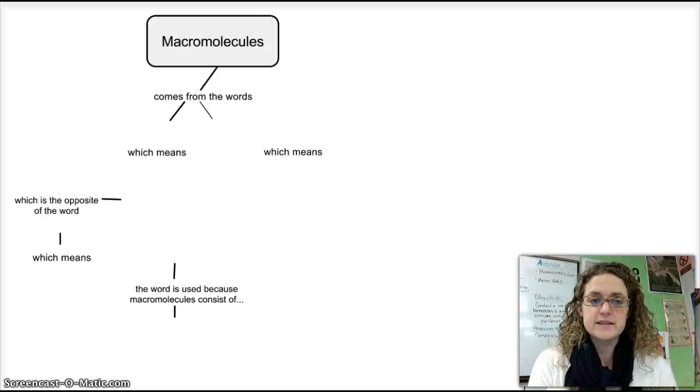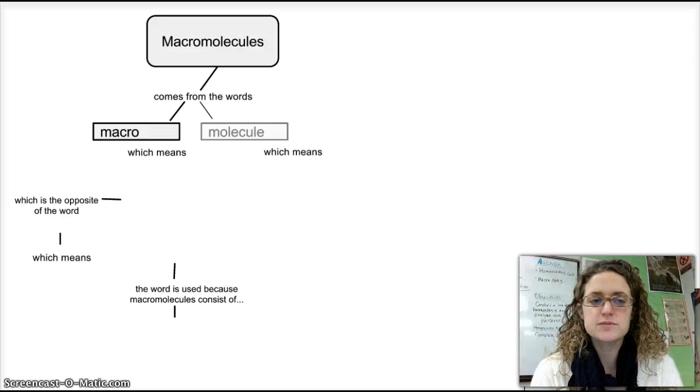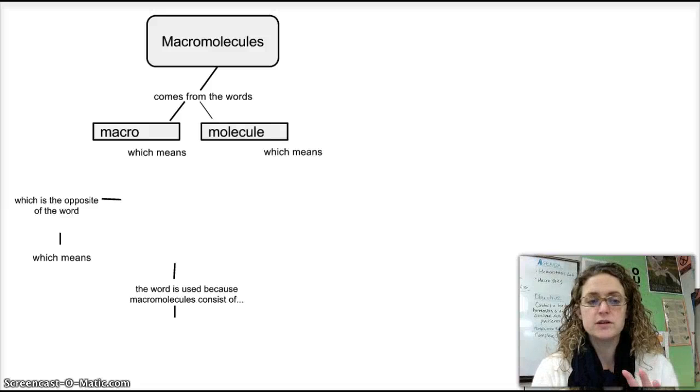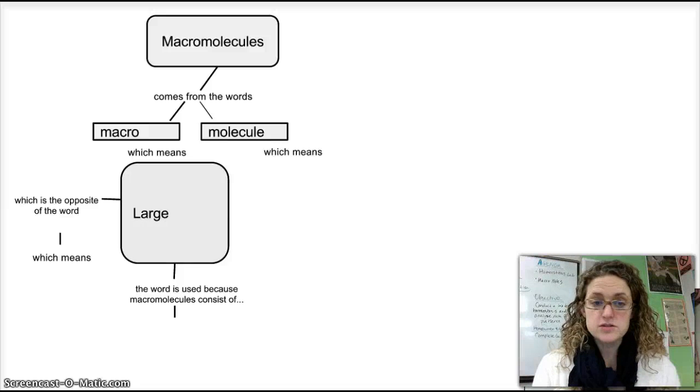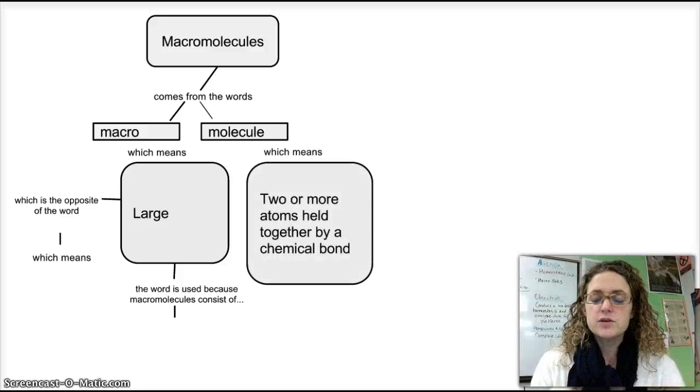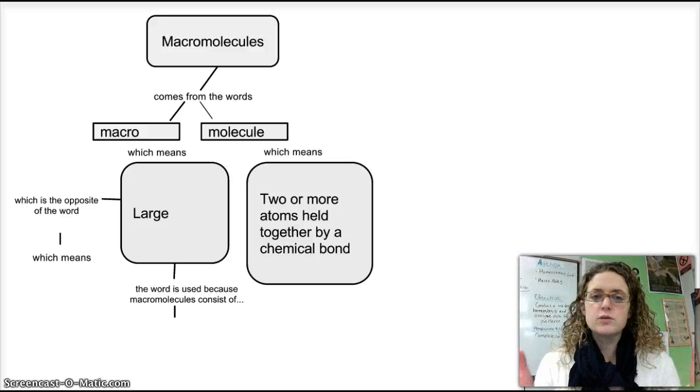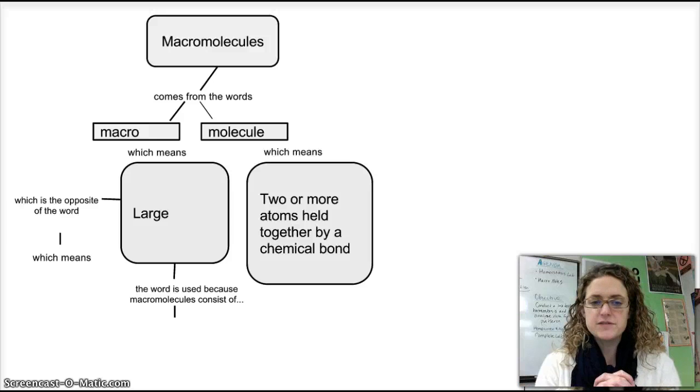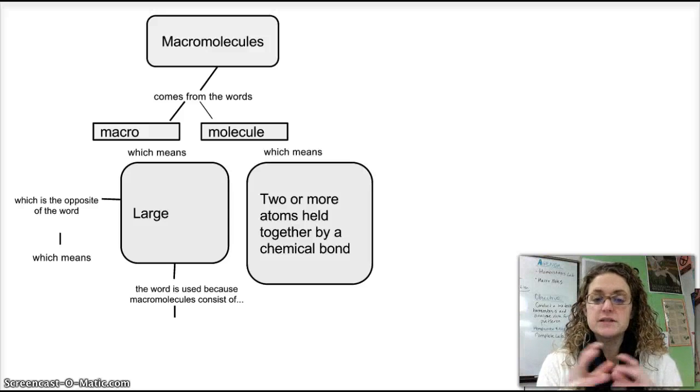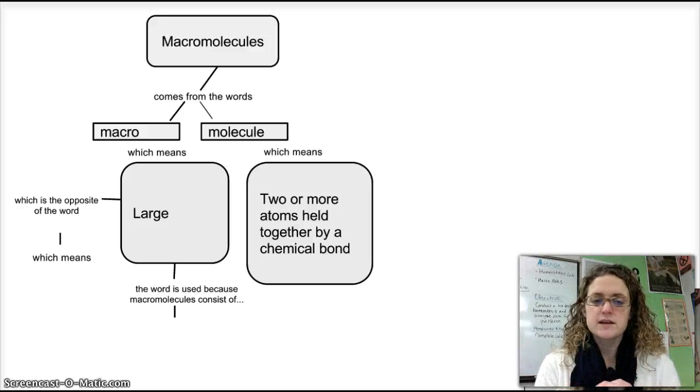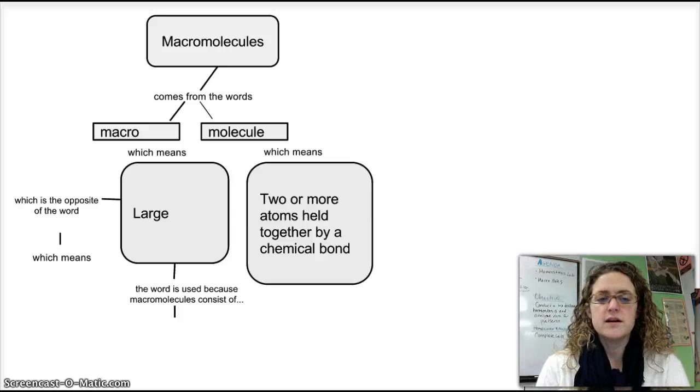First of all, let's break down this complicated word. Macromolecules comes from the word macro and molecule. Macro refers to things that are very large. And molecule is anything that has two or more atoms that are held together by chemical bonds. If you've had physical science recently, you've talked a lot about different types of chemical bonds and how they hold atoms together.